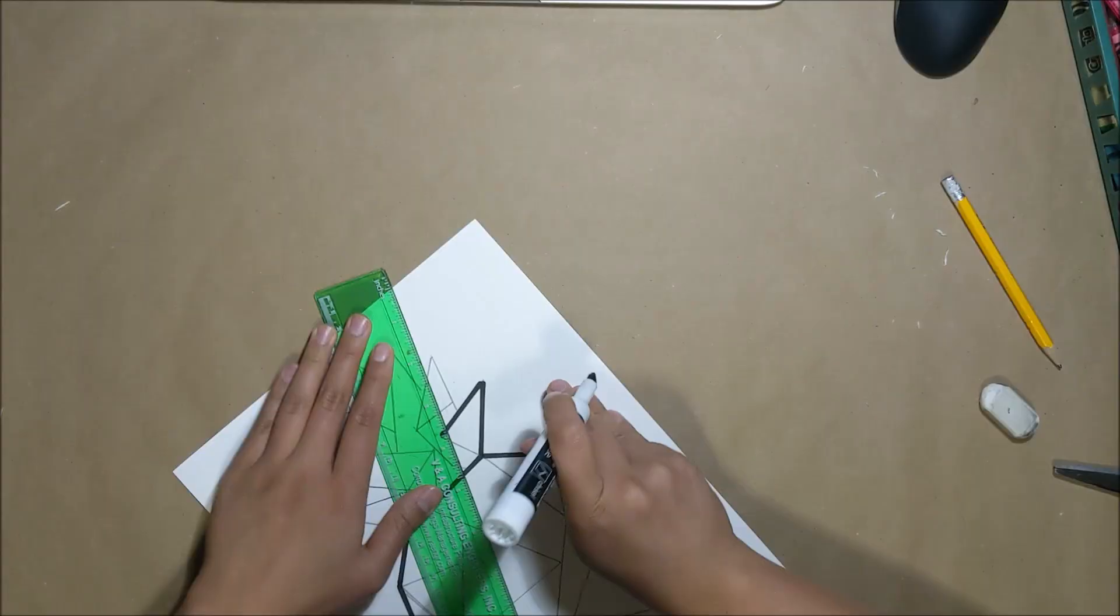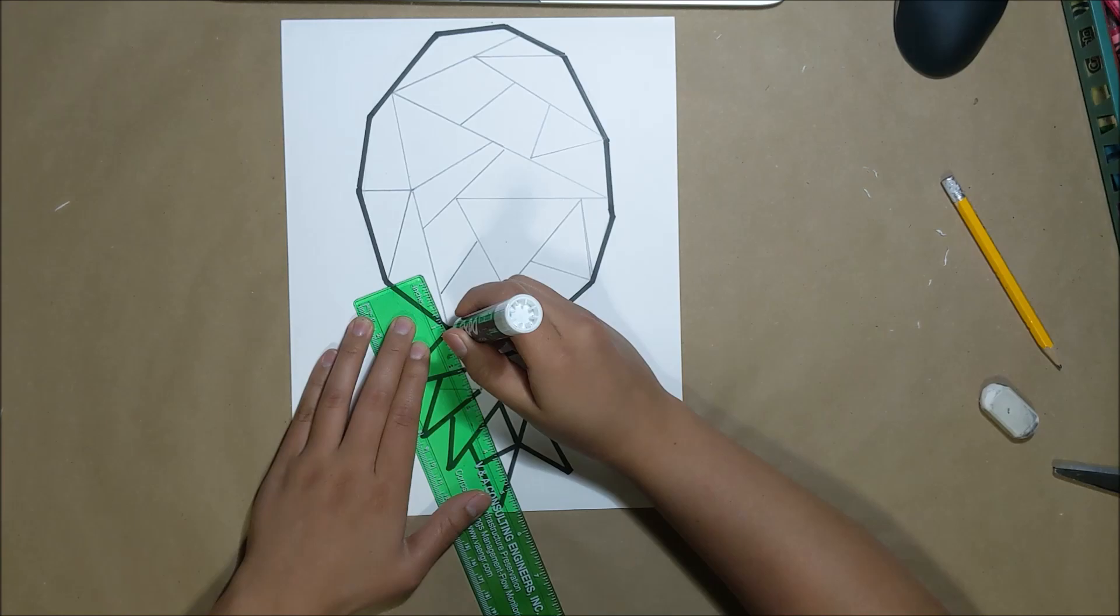Once I'm done outlining, I go in and erase all of the pencil lines so that my image will look nice and clean.